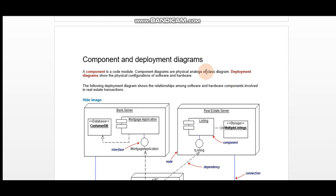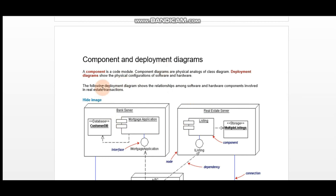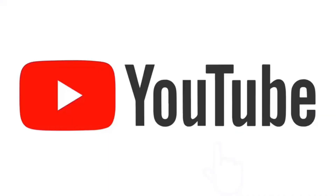The basic point is that component and deployment diagram is the same diagram. We have some physical configuration of software and hardware, and a component is a code module — basically a dynamic diagram. That's it for the component and deployment diagram. In case of any confusion you can ask us in the comment section, and if you want to get a good grip on these diagrams you should practice some examples from the internet as well. Wait for new videos, till then Allah Hafiz.